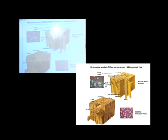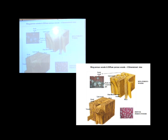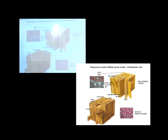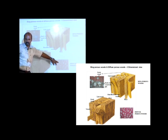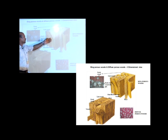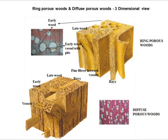Now since wood in general is three-dimensional, you are shown the three-dimensional structures of both ring-porous and diffuse-porous wood. The key point here is that there is a lot of uniformity in the sizes of the cells in diffuse-porous wood — in the cross section the size is almost uniform — whereas in ring-porous wood the size is larger in the early part and smaller later. You can also appreciate that rays are travelling as small tubes horizontally, whereas vessels are vertical in their position.